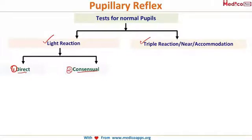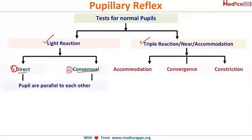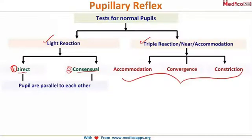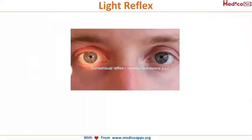When I remove the light from the right eye pupil, the left eye pupil also dilates — meaning both pupils function in parallel with each other. The three components of the triple reaction are accommodation, convergence, and constriction.